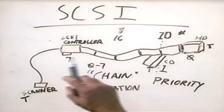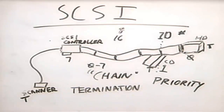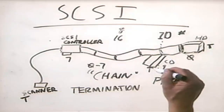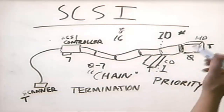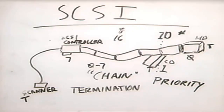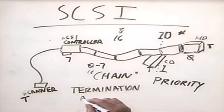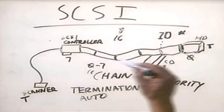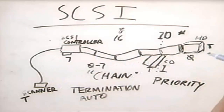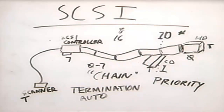Back in the early days of SCSI this was challenging because all termination had to be manually configured, and it was common to add a CD drive and forget to check termination, resulting in the hard disk drive becoming inaccessible. Newer SCSI controllers and standards have auto termination, where the controller and devices work together to sense who's at the end of the bus and automatically turn termination on.